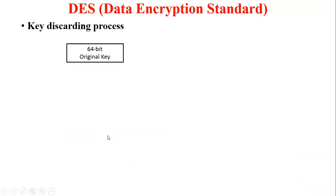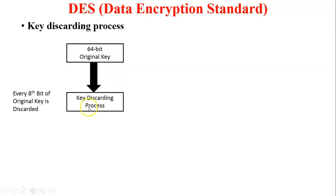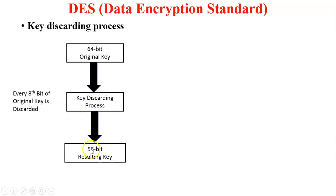Now first, the key discarding process. Before entering the key into the DES process, the original key size is 64 bits. In the key discarding process, every 8th bit of the original key is discarded and it generates a 56-bit resulting key. We will discuss why it generates 56 bits later. So the 64-bit key is converted into a 56-bit resulting key.